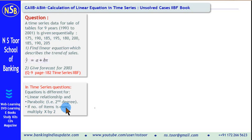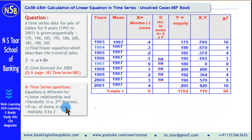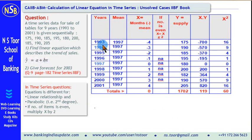Now we can start with the solution. First of all, we shall draw a table and make the calculations in it. In this table, we have placed the years, and based on these years we have calculated the mean. The total of these 9 items divided by 9 gives us 1997, so this is the mean value of these years.